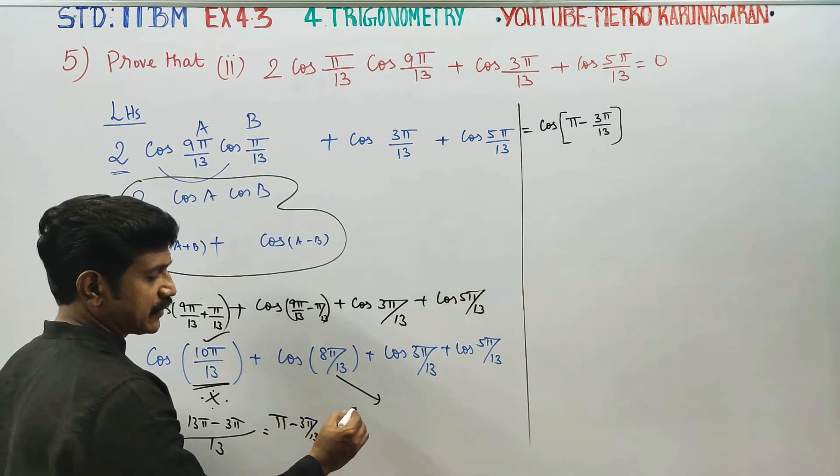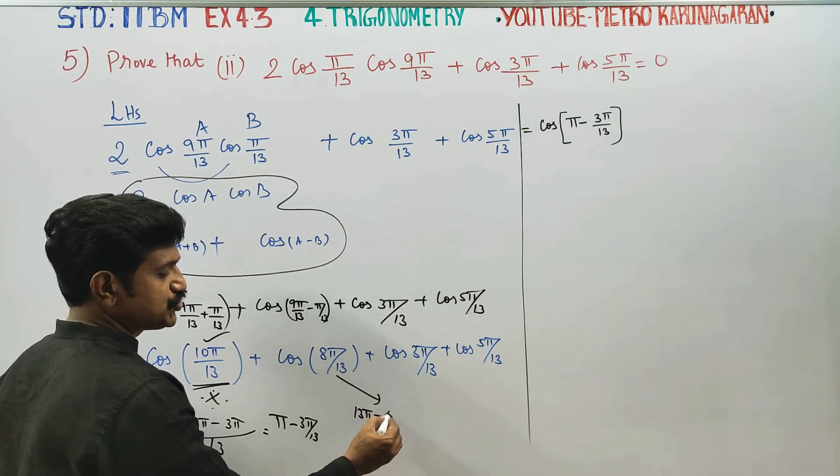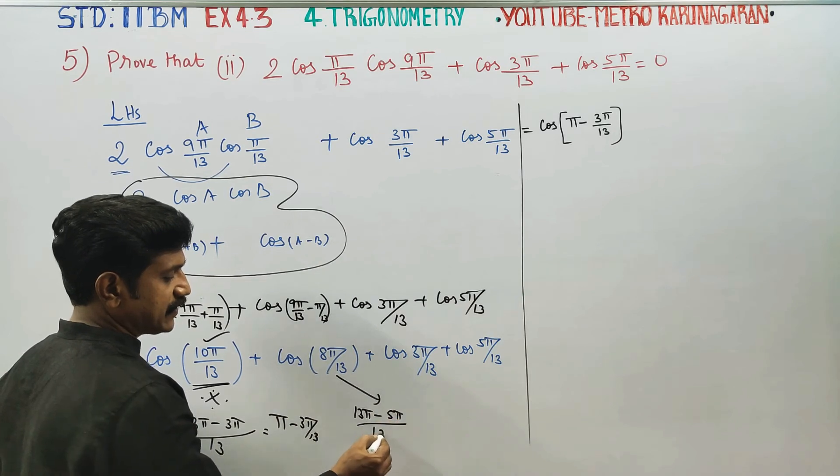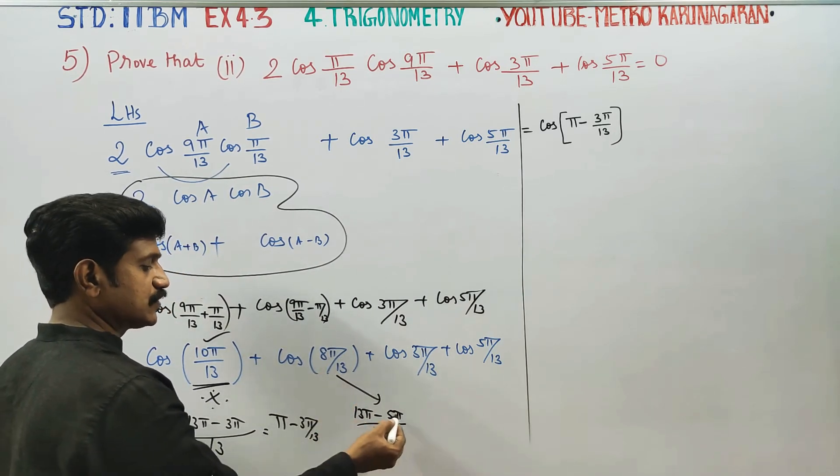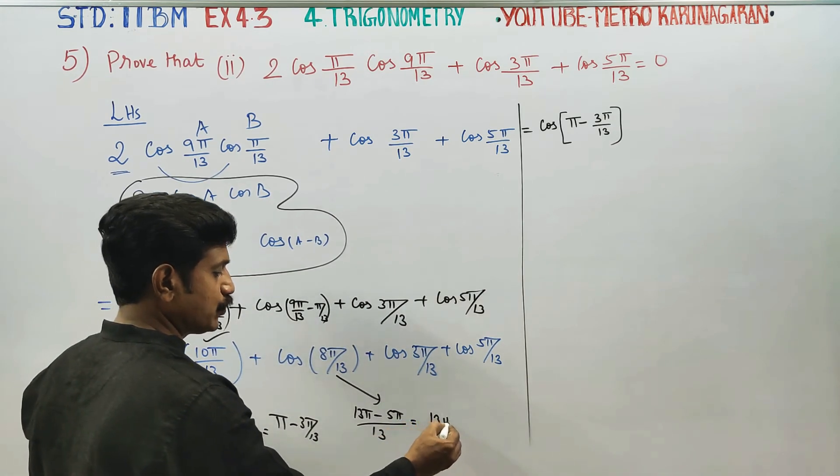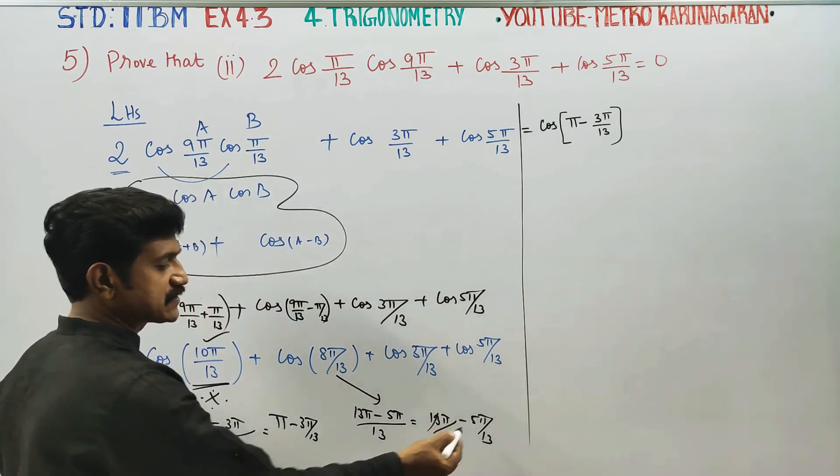We can add this. How do we do? 13 pi minus 5 pi by 13. 13 pi by 13. This is 8 pi. 13 pi by 13 minus 5 pi by 13. This is 13 pi by 13, this is canceling.